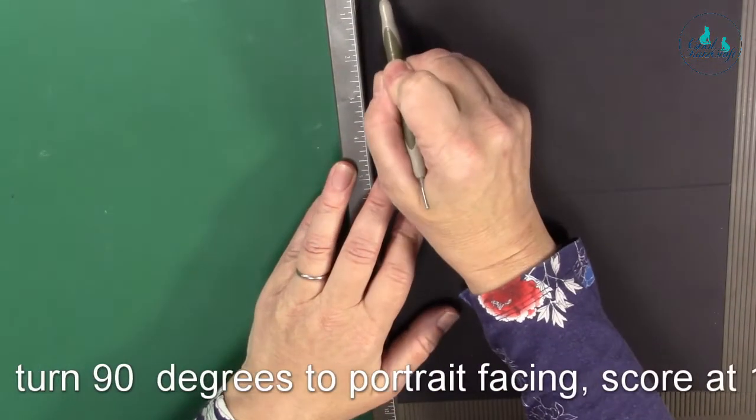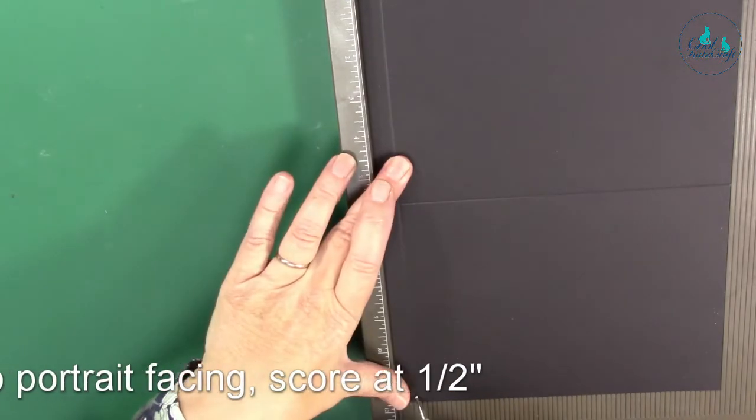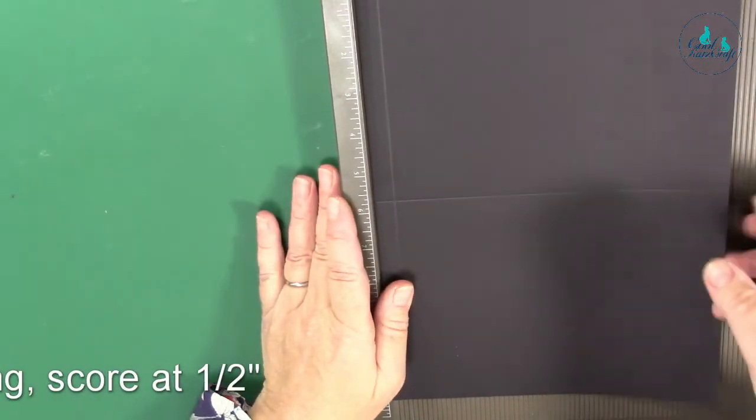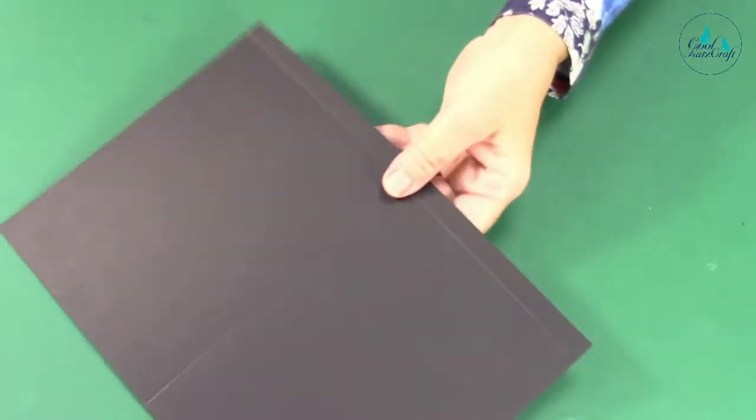You're going to turn it 90 degrees and then you're going to score down half an inch. You need to do a bit of snipping with this.